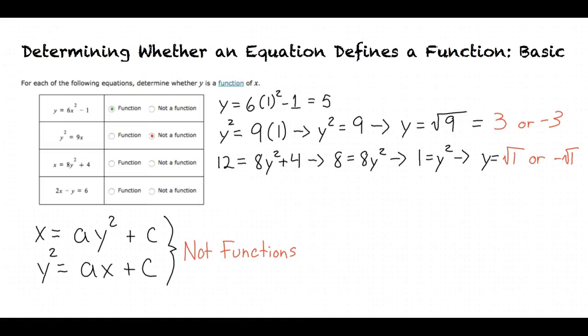Precisely. And lastly, we have 2x minus y equals 6. Okay, I think I've got this one. So, even if I rearrange the problem to be y equals 2x minus 6, the equation doesn't have the output needing to be square rooted, meaning this is a function. Exactly.